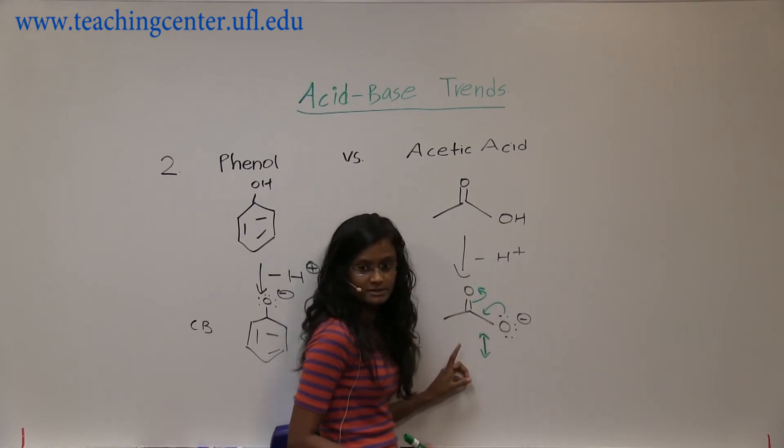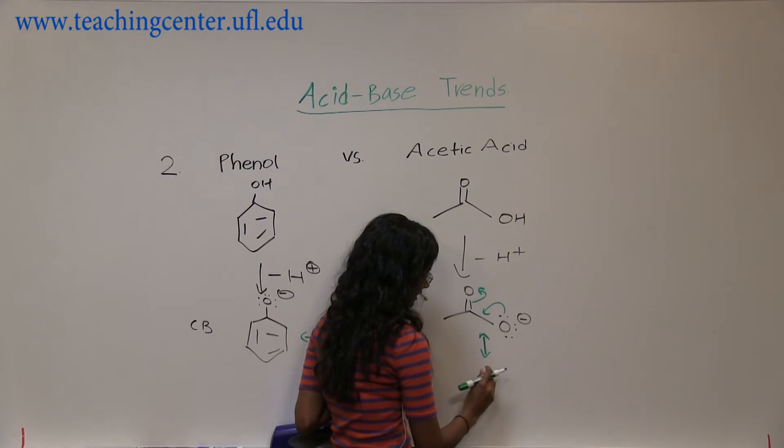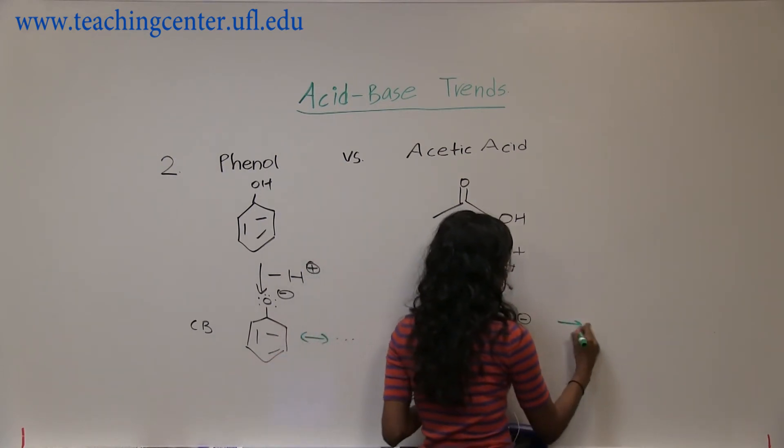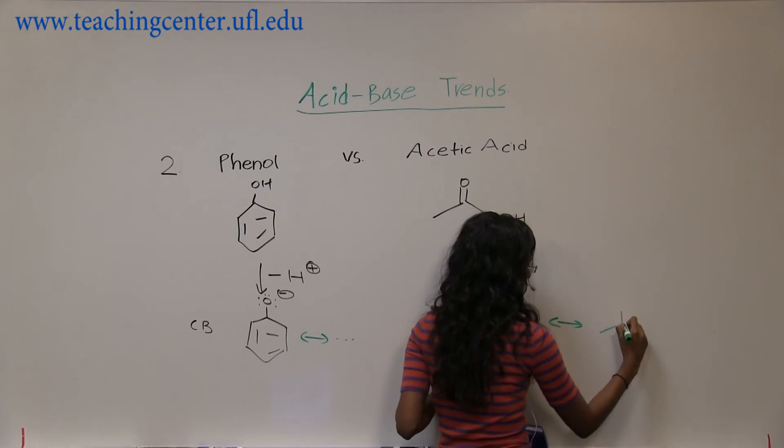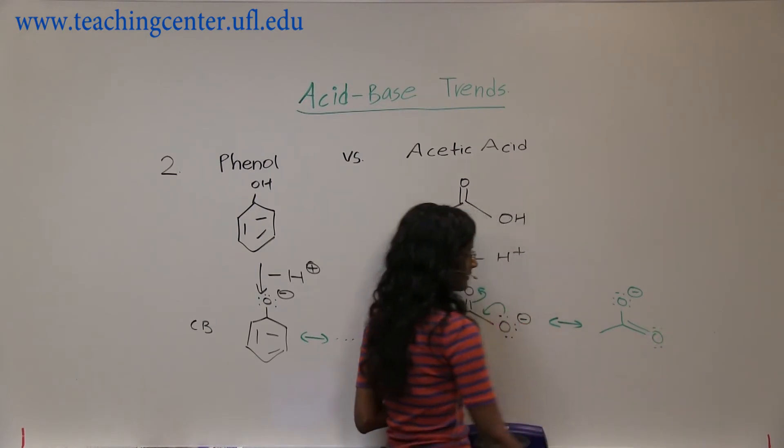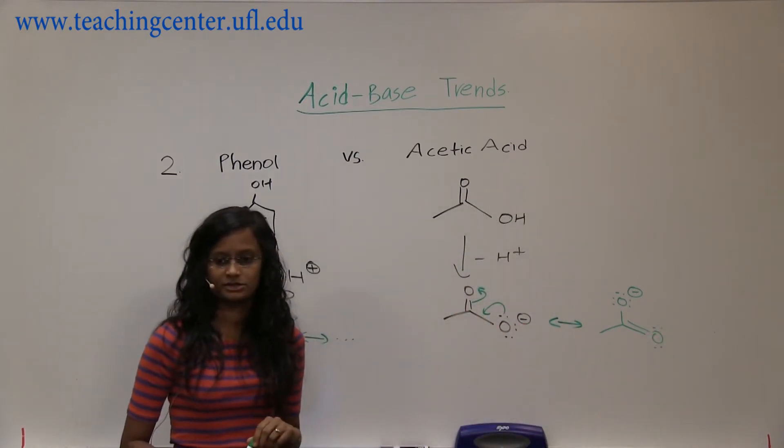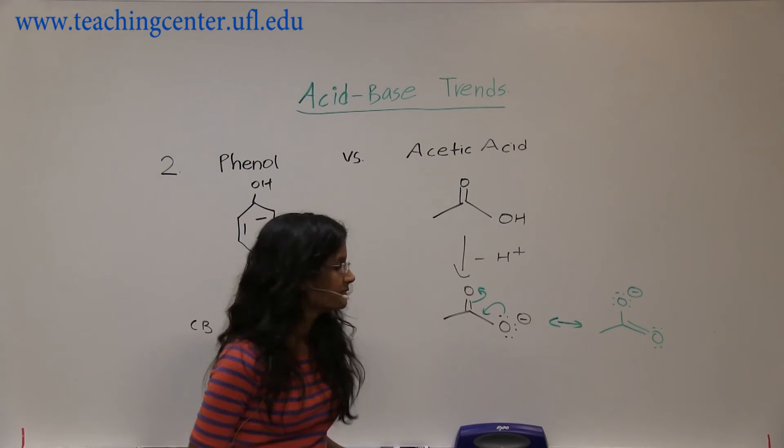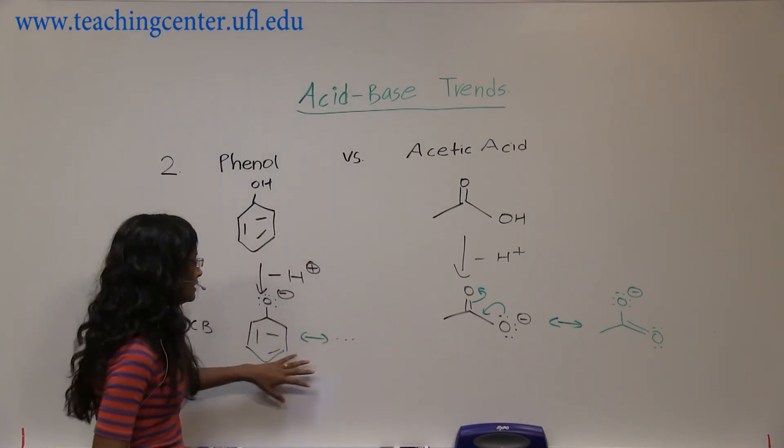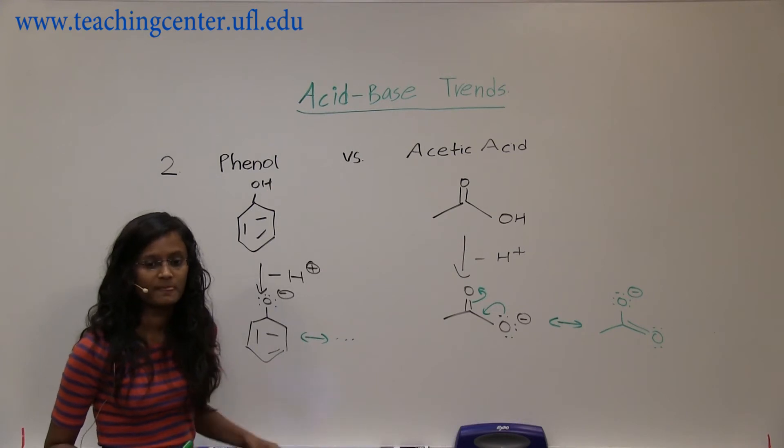To the other oxygen, so you would have this oxygen will get a double bond and that oxygen will get a negative charge. Alright, so these are the two resonance structures that this structure has, and four resonance structures that one has.